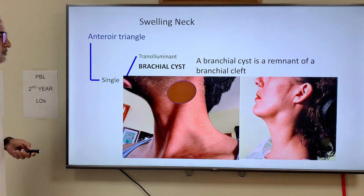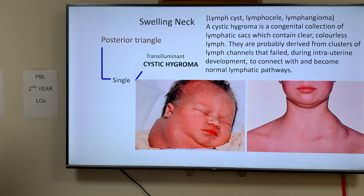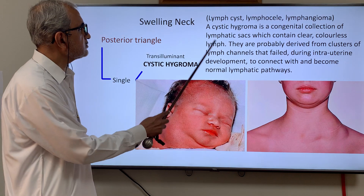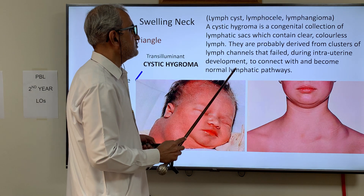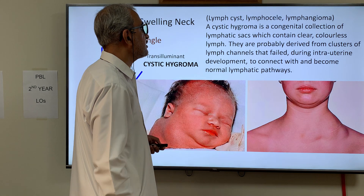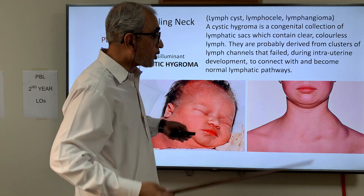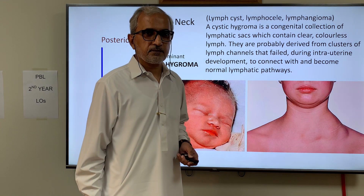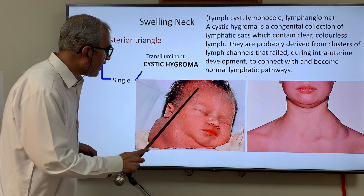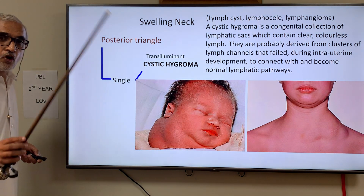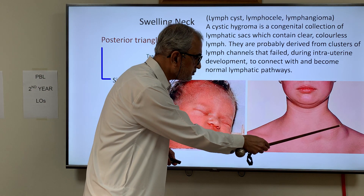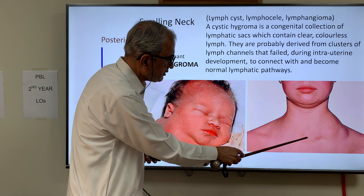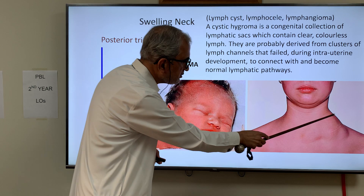In the posterior triangle, a single cystic swelling is a cystic hygroma. A cystic hygroma is a congenital collection of lymphatic cells which contain clear, colorless lymph. They are probably derived from clusters of lymph channels that fail during intrauterine development to connect with each other and become normal lymphatic pathways. A child is shown because the commonest age of presentation is in childhood, though it can also present in adults. The sternocleidomastoid muscle demarcates the posterior triangle.